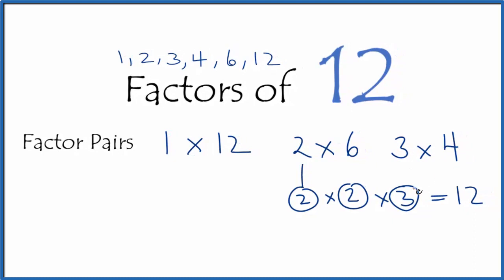If you broke 3 and 4 up, you can get the same ones. You can also write this as 2 times 2, which is 2 squared times 3. That would also give you 12.